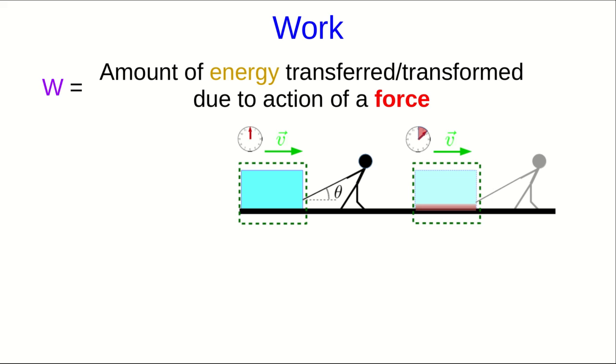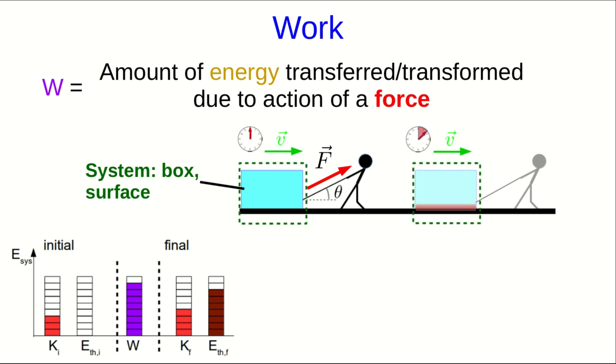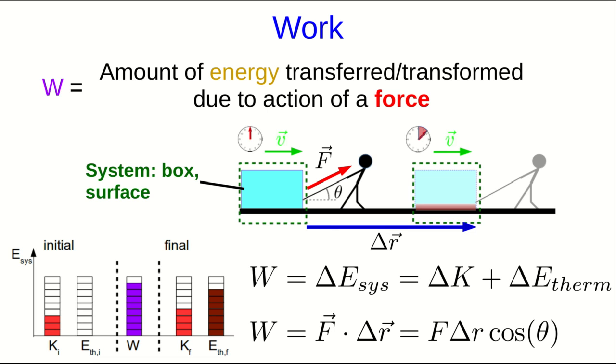But suppose the person pulls on an angle. Everything works out the same way, except that the work is the dot product of the force with the displacement vector, or in other words, the magnitude of the force times the magnitude of the displacement times the cosine of the angle between them.